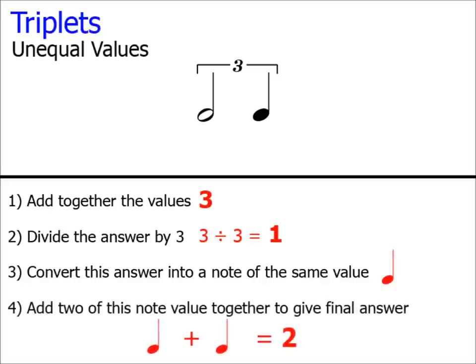Finally, step 4, we then add 2 of these notes together to give us the total value of the triplet. So in this case, 2 crotchets equal 2. We can therefore say that our group of triplets has a rhythmic value of 2.